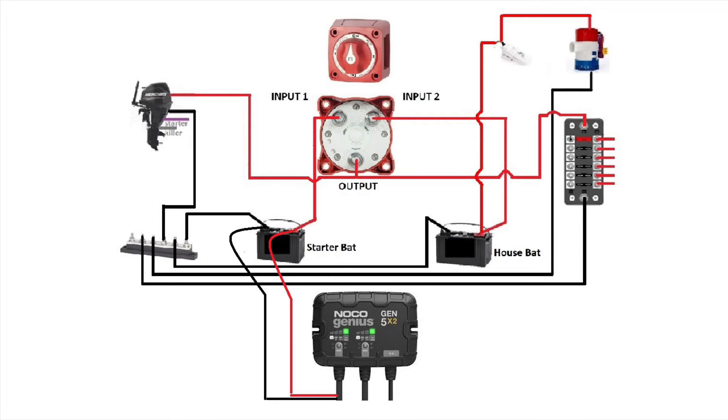And now we'll move to the house battery. We'll take output two of the charger, connect the black wire to the negative of the battery and the red wire to the positive of the battery.